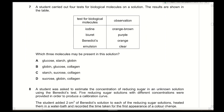Question 7: A student carried out four tests for biological molecules. For iodine — tests for starch; a positive test goes from brown to blue-black. Because it stayed orange-brown, this is a negative test — starch is absent. For Biuret's test — tests for proteins; a positive test goes from blue to purple. Because it turned purple, proteins are present. For Benedict's solution — tests for reducing sugars; a positive test goes from blue to brick red. Orange is also a positive result, so reducing sugars are present.